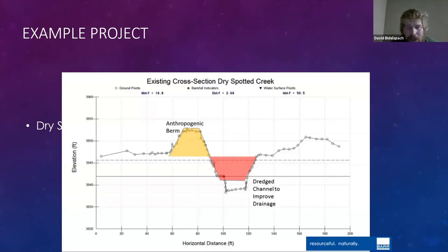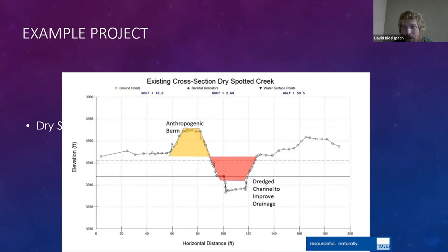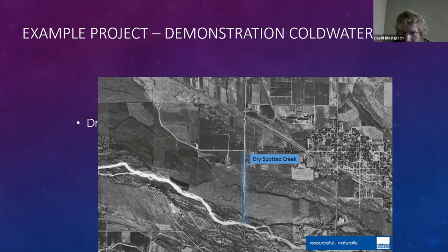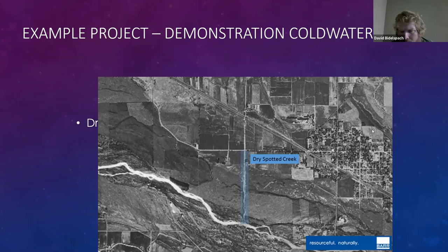Dry Spot Tail Creek is just a straight-line ditch right now. When we surveyed it, there is so little sedimentation coming through the system that you can still see relics of where the anthropogenic berm was built and how much material was side-cast. The amount of material cut down since 1950 is very small. In 1952 aerial photography, you can see it looks about as straight as the roads that cross over it upstream.